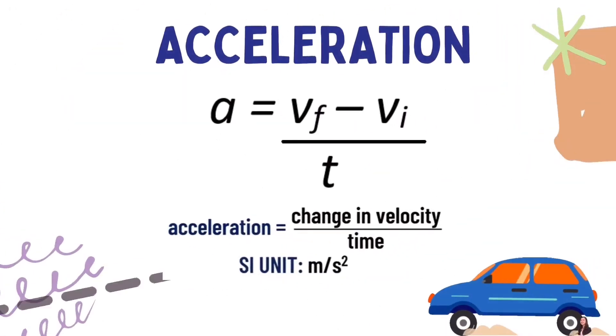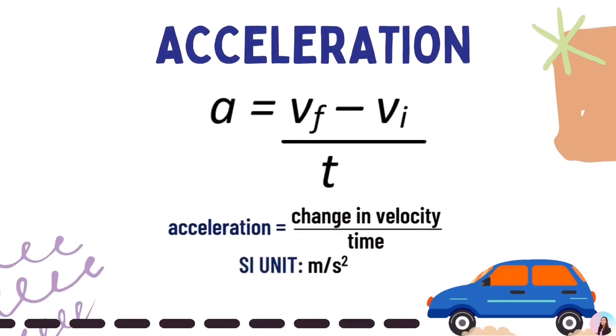To calculate for the acceleration of an object, we need this formula. Acceleration equals change in velocity over time, or acceleration equals the final velocity minus initial velocity over time. Take note of the SI unit which is meters per second squared.